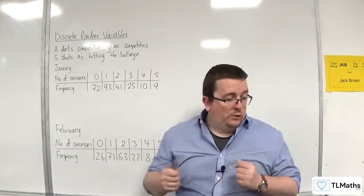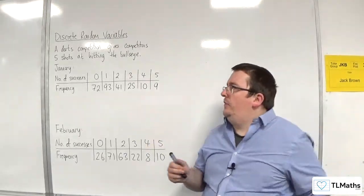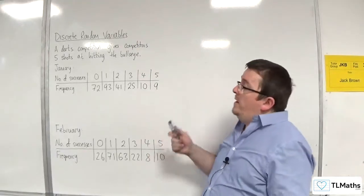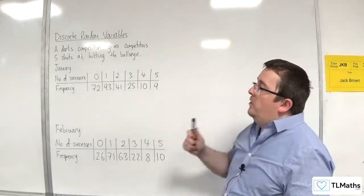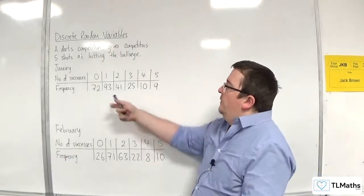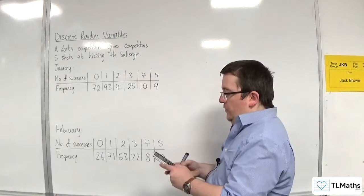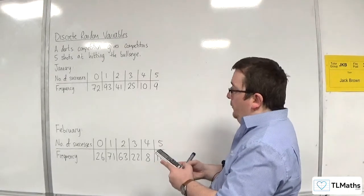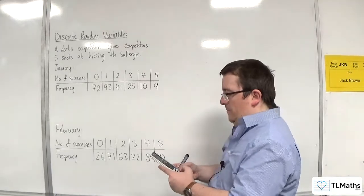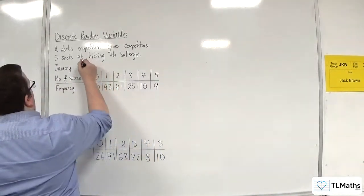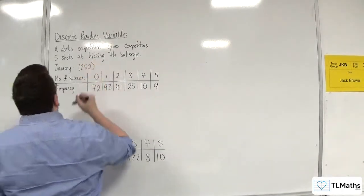Now, the first thing to note is that we can't compare these two directly. The reason for that is because the total frequencies are different. If we add up the total frequency for January—72 plus 93 plus 41 plus 25 plus 10 plus 9—we get 250 competitors for January.